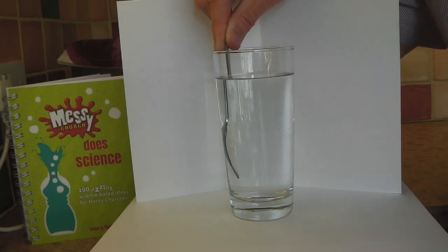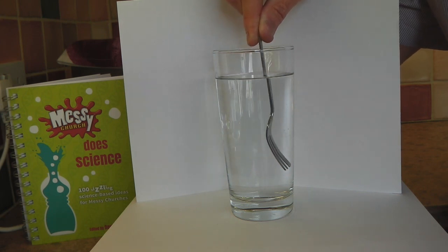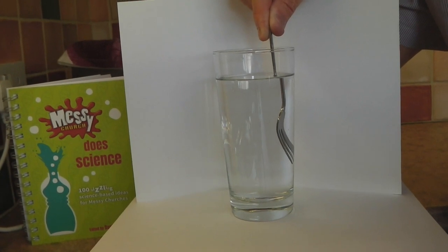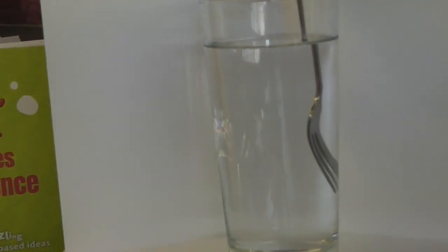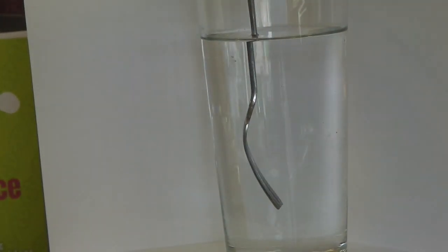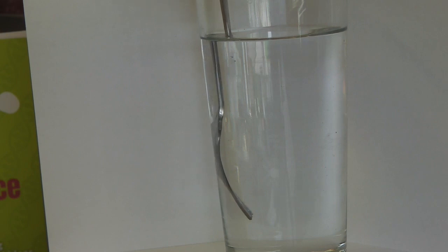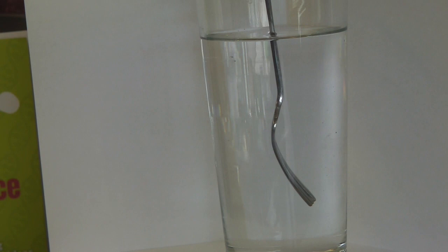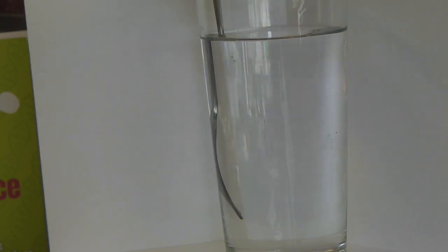Light travels in straight lines. But when it moves between the water and air, it gets bent a little. This means objects in water appear to be at a slightly different position than they really are. It can make picking things up from water really tricky.